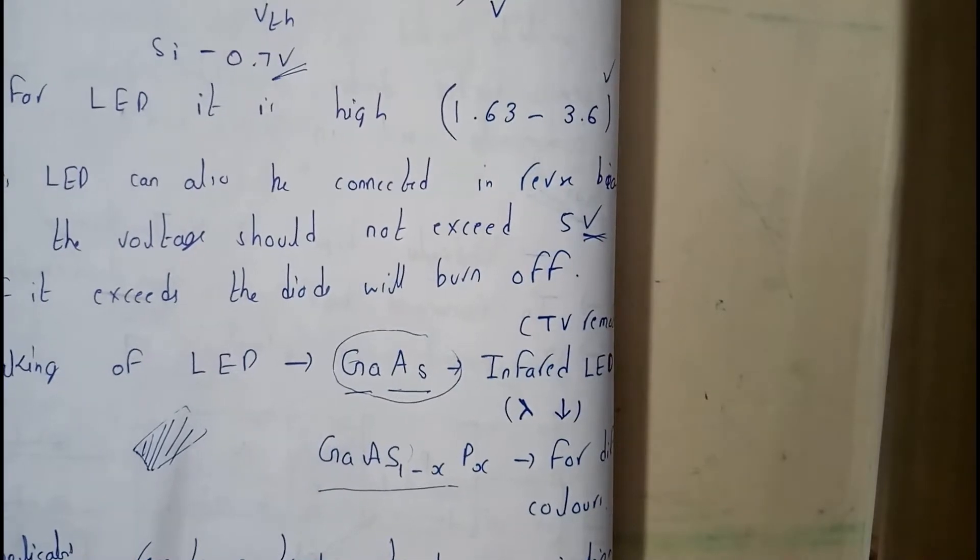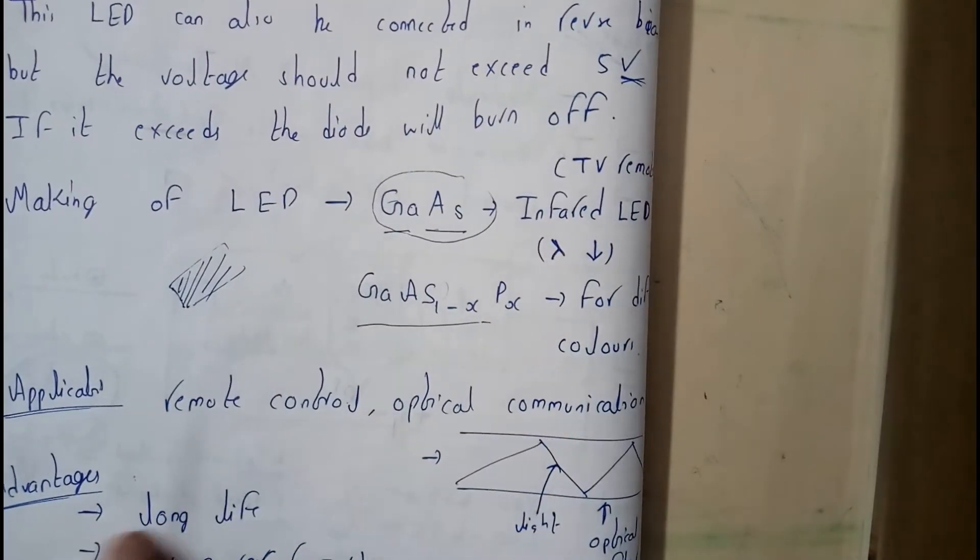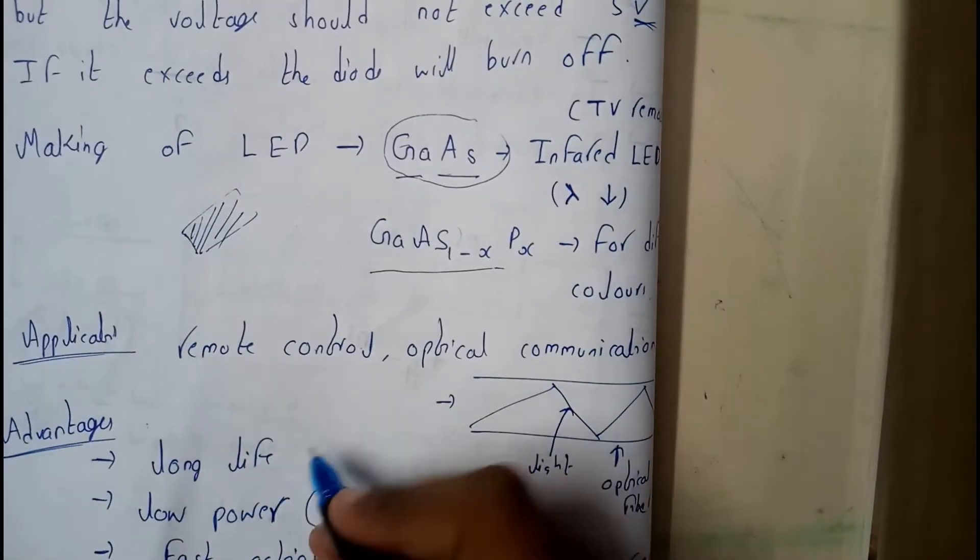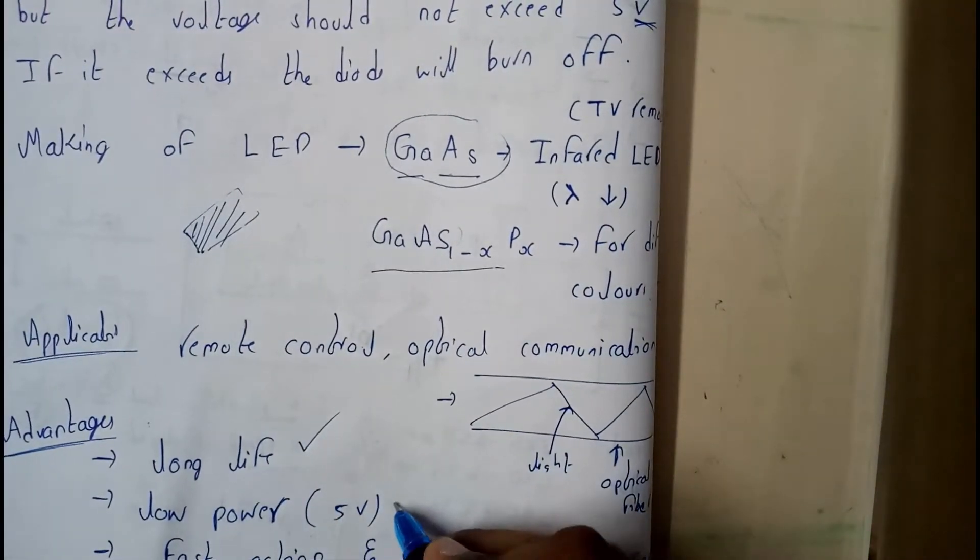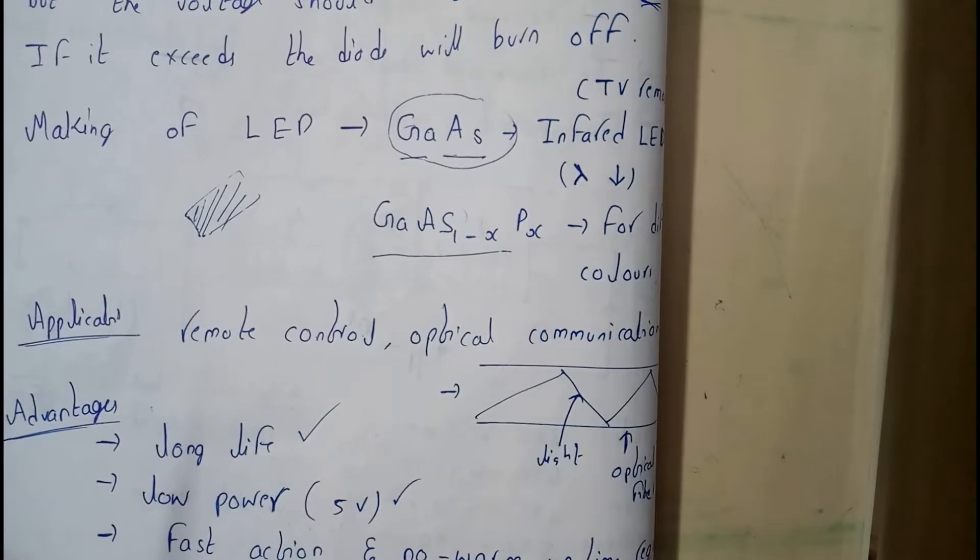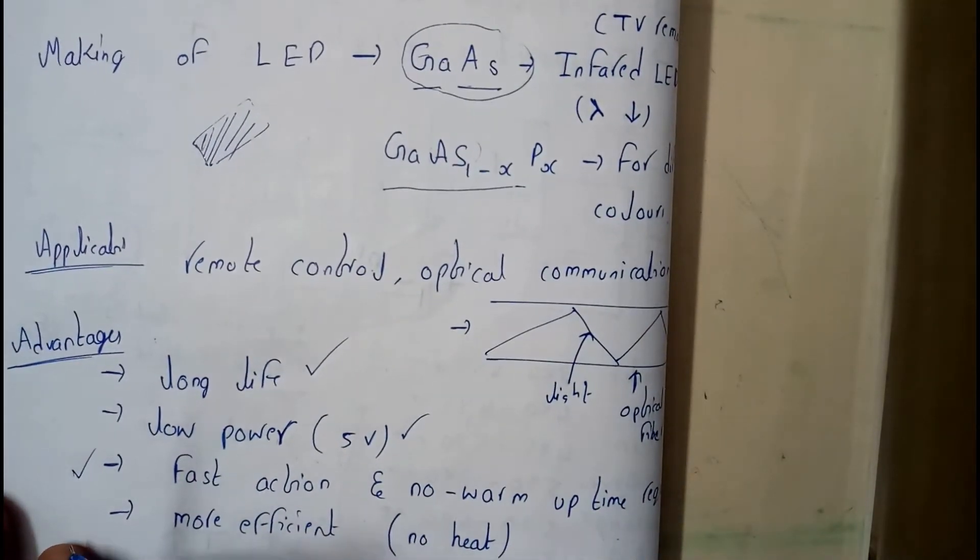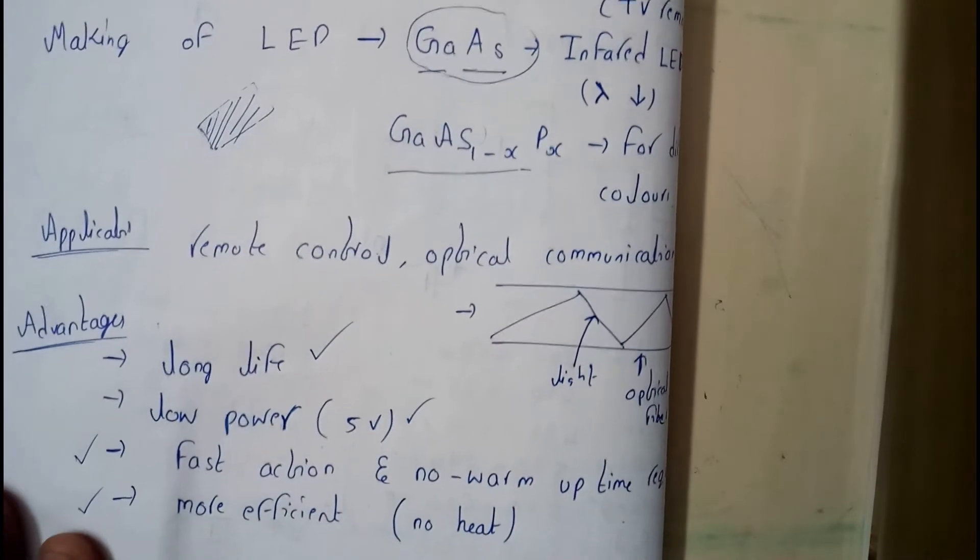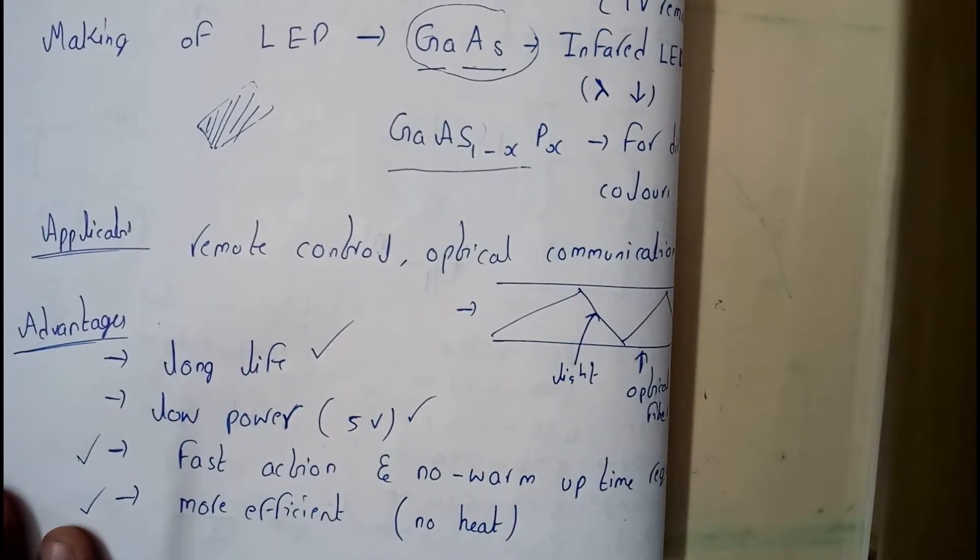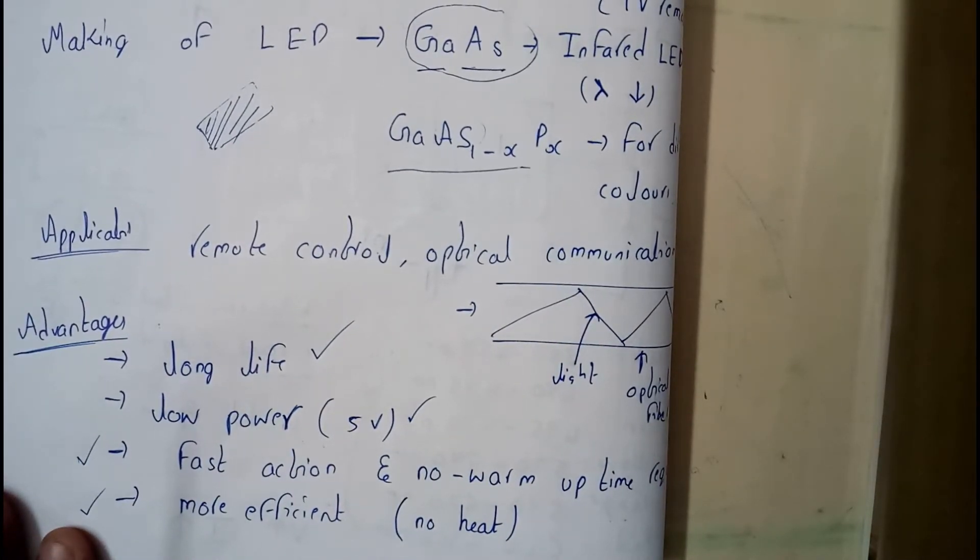If you go through the applications, those are nothing but remote controls, optical communication. Advantages are nothing but we'll be having a long life, it's going to be low power supply - we need low power supply and the action is really fast. That's a noted point. And these are more efficient.